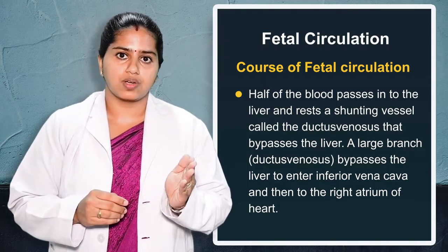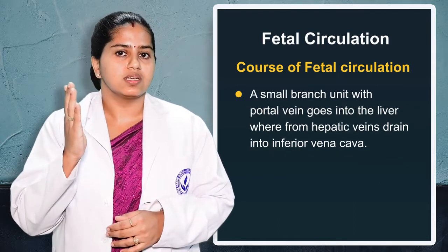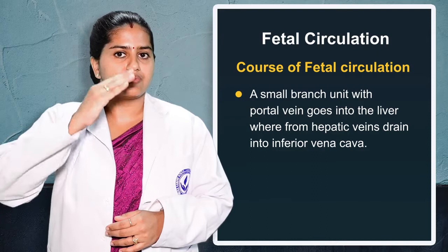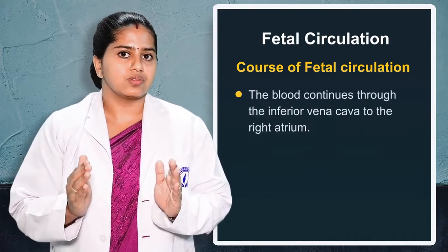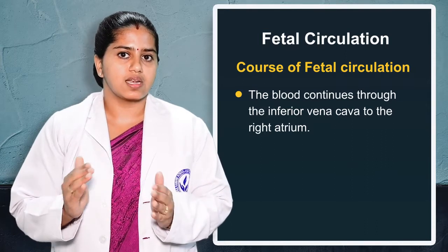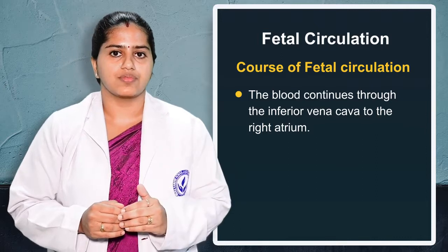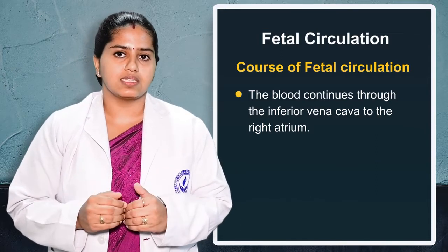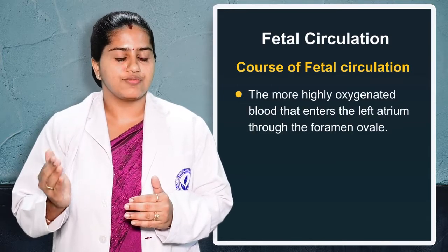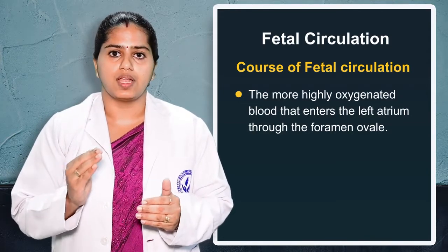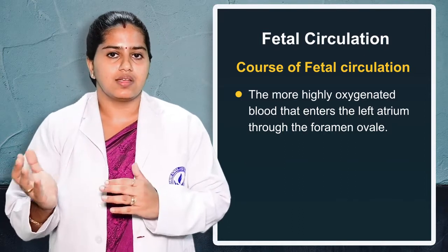Half of the blood goes to the portal vein and the majority goes to the inferior vena cava, which reaches the right atrium. The heart has two atria — right and left — and two ventricles — right and left. When the inferior vena cava reaches the right atrium, there is a shunt present between the right atrium and the left atrium known as the foramen ovale. More of the oxygenated blood from the right atrium passes to the left atrium through it.